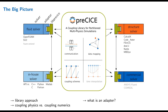preCICE itself has no notion of physics — instead it handles the coupling numerics and the technical aspects of coupling, depicted within the green box in the middle. First, preCICE handles communication: coupled solvers are different executables that might even run on different clusters, so preCICE handles communication between them. preCICE also does data mapping, bringing data from one mesh to another. It handles coupling schemes — the logic of who sends data to whom and when — as well as acceleration schemes to stabilize strongly coupled problems. There is also time interpolation, still work in progress.